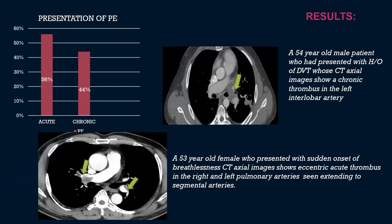Among patients with pulmonary embolism, 56% had acute embolism and 44% had chronic embolism. A 54-year-old male who presented with history of DVT showed on CT axial images a chronic thrombus in the left interlobar artery. A 53-year-old female who presented with sudden onset of breathlessness showed an eccentric thrombus in the right and left pulmonary arteries, extending into the segmental arteries as well.